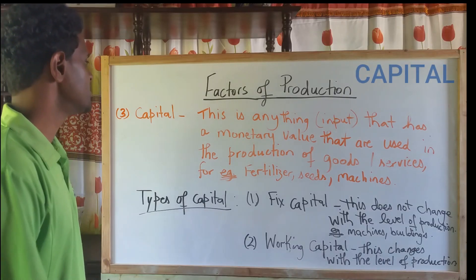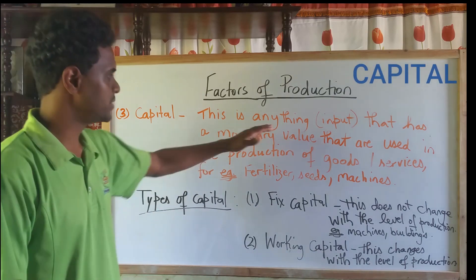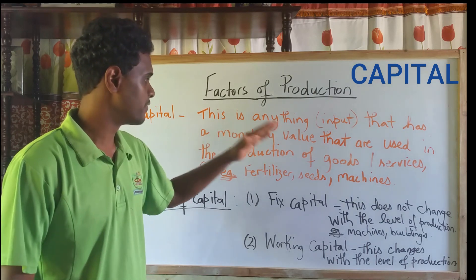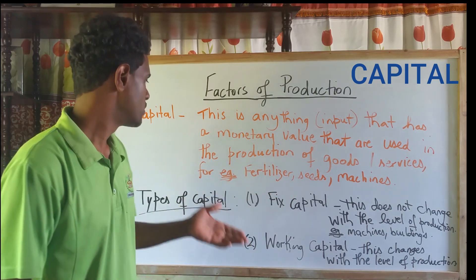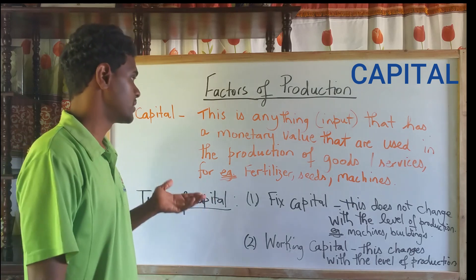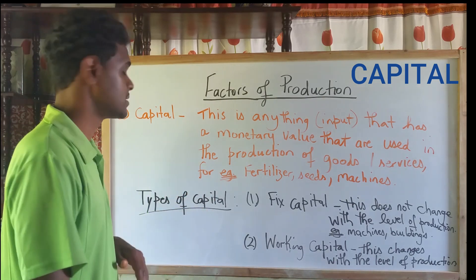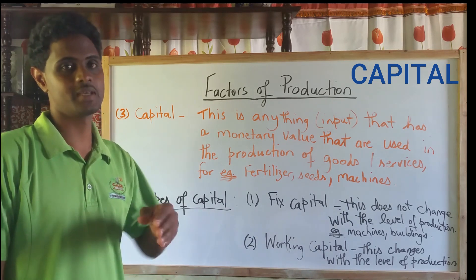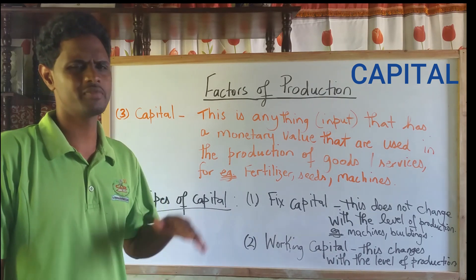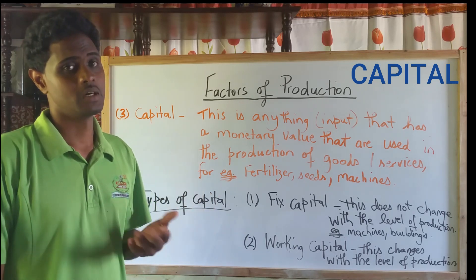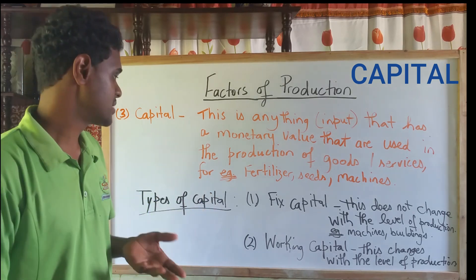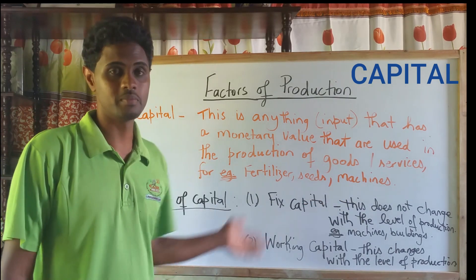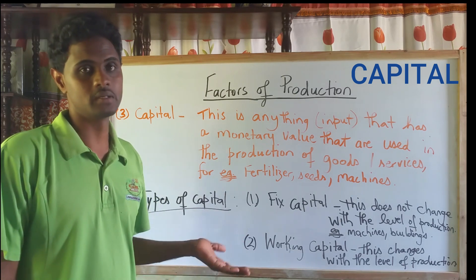Capital is anything — any input — that has a monetary value and is used in the production of goods or services. It doesn't necessarily mean capital is just money; it's anything that has a monetary value and is used in production, apart from land and labor, that is used in the creation of goods. Examples include fertilizers, seeds, machines, equipment, buildings, etc.